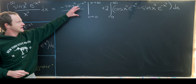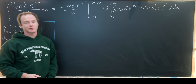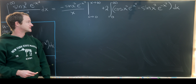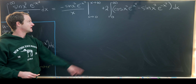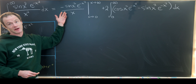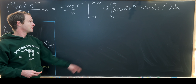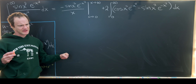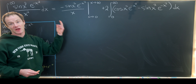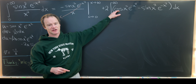Let's handle the boundary terms. As x tends to infinity, e to the minus x squared drives the expression to zero, and the denominator also pushes toward zero, so both factors send the limit to zero. As x tends to zero, sine of zero is zero but there's a zero in the denominator; a straightforward application of L'Hôpital's rule shows that limit also goes to zero. So the boundary terms vanish and we're left with just the integral.